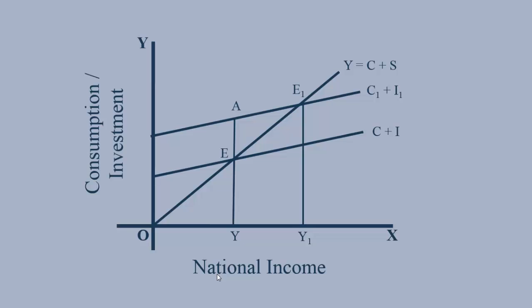According to Multiplier Principle, Y1 must be greater than EA. But we have to show it graphically. For this, we have to draw a line EN from the point E to the line Y1 E1.